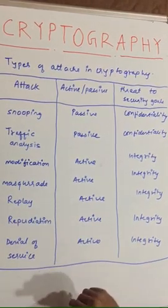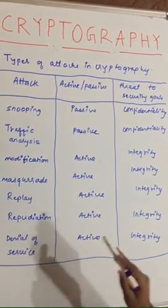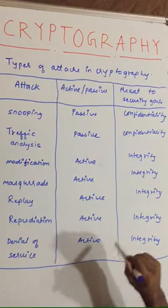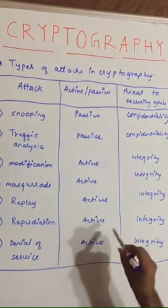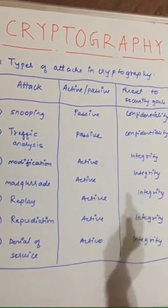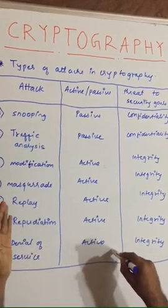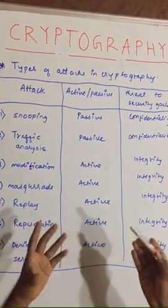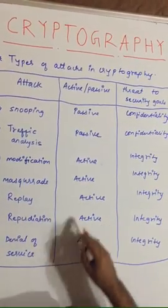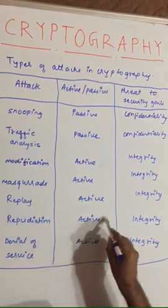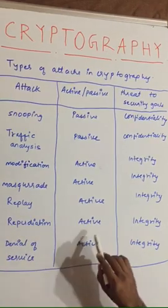Another attack is repudiation. In this attack, the intruder fetches the data from in between and either sends it to the receiver or does not. The problem is that the receiver claims they did not receive the data, while the sender claims they did send it. This denying of sending and receiving is what characterizes the repudiation type of attack.